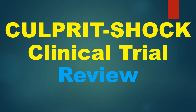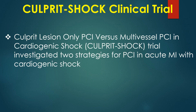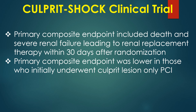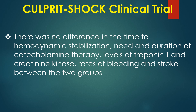Discussion on the CULPRIT-SHOCK clinical trial. The CULPRIT-SHOCK trial investigated two strategies for percutaneous coronary interventions in acute myocardial infarction with cardiogenic shock. It was a multicenter randomized trial involving 706 participants randomized to either immediate PCI of the culprit lesion only with option for staged PCI of non-culprit lesions, or immediate multivessel PCI. The primary composite endpoint included death and severe renal failure leading to renal replacement therapy within 30 days. The primary composite endpoint was lower in those who initially underwent culprit lesion only PCI. There was no difference in time to hemodynamic stabilization, catecholamine therapy, troponin T, creatinine kinase, rates of bleeding or stroke between the two groups.